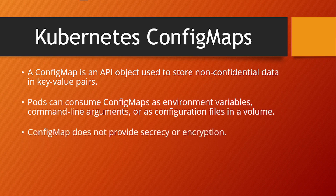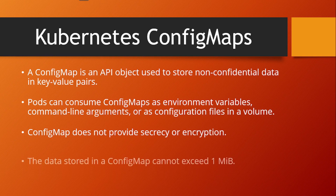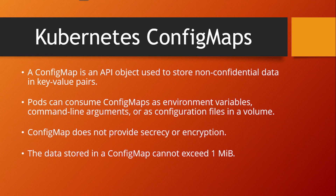One important thing to be clear about: ConfigMap does not provide secrecy or encryption. If you need to store secret or encrypted data, you have to use Secrets in Kubernetes. Also, ConfigMap cannot be used to store large data — the data stored in a ConfigMap cannot exceed one megabyte.